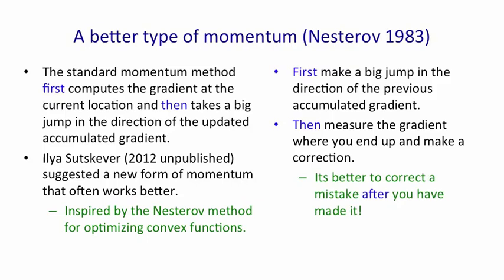One way of thinking about what's going on is in the standard momentum method, you add in the current gradient, and then you gamble on this big jump. In the Nesterov method, you use your previous accumulated gradient, you make the big jump, and then you correct yourself at the place you've got to.